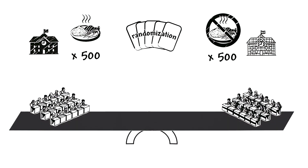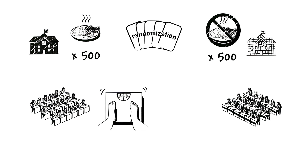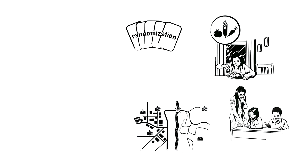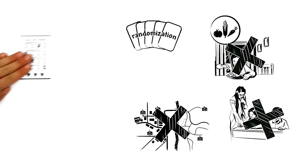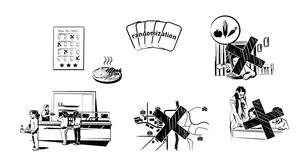This does not only include characteristics that can then be measured, such as the children's weight, but also others that cannot easily be measured — for example, how motivated a child is. In this way, other causes for improved performance at school can be excluded, and the change in educational performance can be attributed to the free provision of school lunch alone.